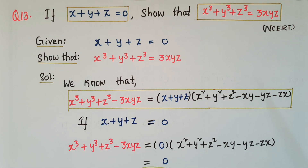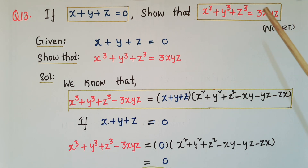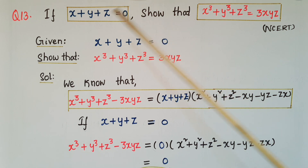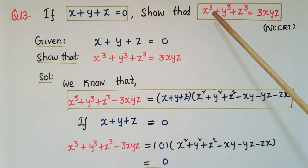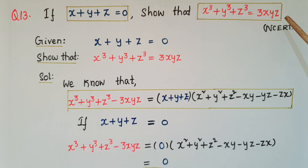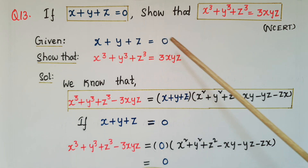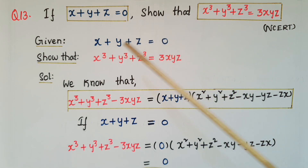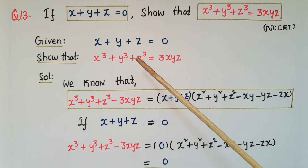Hello everyone, today I am going to solve question number 13 and 14 from NCERT. If x plus y plus z is equal to 0, show that x cube plus y cube plus z cube is equal to 3xyz. Given: x plus y plus z is equal to 0, and we have to show that x cube plus y cube plus z cube is equal to 3xyz.